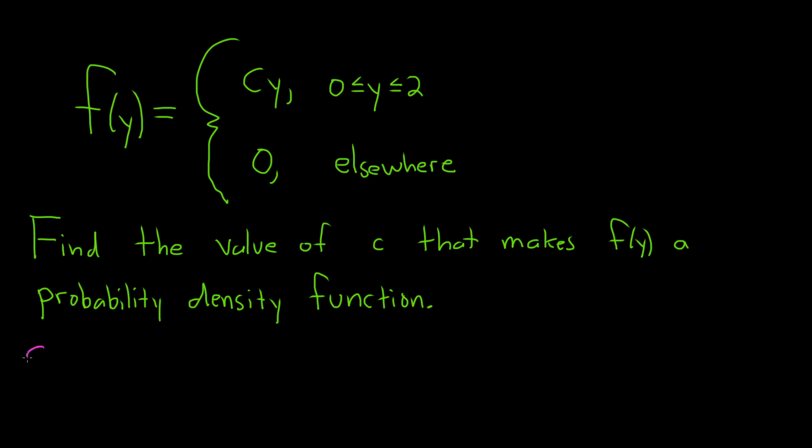So there's two properties that have to be satisfied. The first one is that f of y is non-negative for all values of y, and the second one is if we integrate from negative infinity to infinity f of y dy, we should get one. We're going to start by using this to find the value of c, then we can use this to help check our answer.